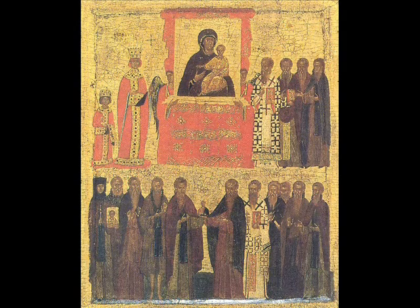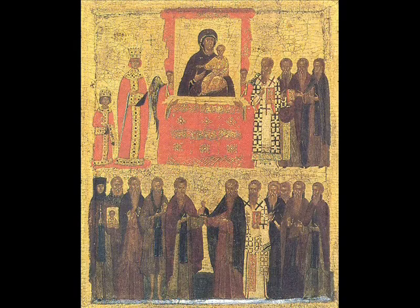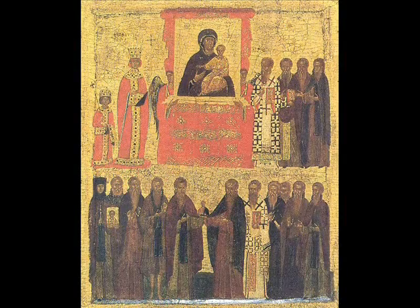This icon has disappeared, but it was the most important one in Constantinople and was loved by everybody — they identified it with the city. It was the icon which Emperor Michael VIII Palaeologus followed on foot when he entered Constantinople in 1261 and restored Byzantine rule after 50 years of crusader occupation.